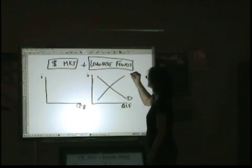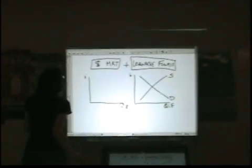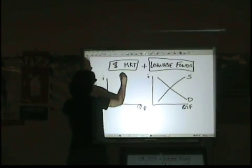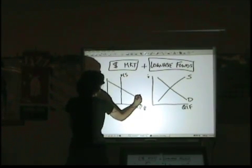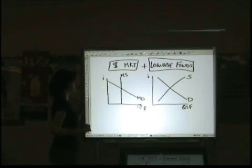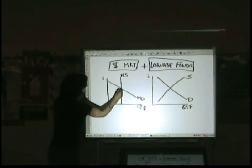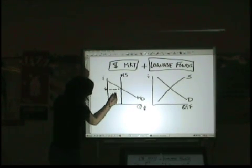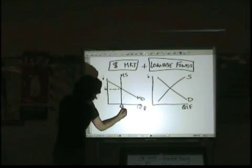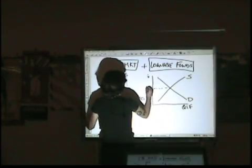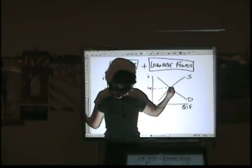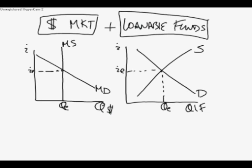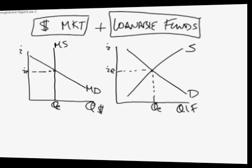Loanable funds graph, demand, supply, money market, vertical supply. And downward sloping demand. Now, let's put in our equilibrium interest rate. That's not quite level. It's close. Equilibrium, head over here. All right.